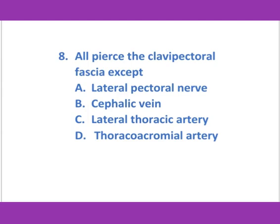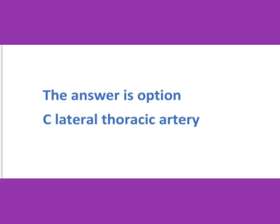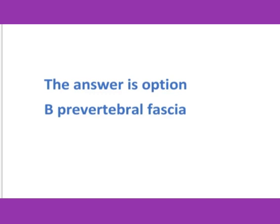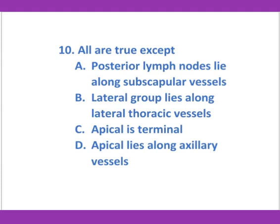All pierce the clavipectoral fascia except — (a) lateral pectoral nerve, (b) cephalic vein, (c) lateral thoracic artery, (d) thoracoacromial artery. The answer is option C: lateral thoracic artery. Axillary sheath is derived from — (a) pretracheal fascia, (b) prevertebral fascia, (c) deep fascia of thorax, (d) investing layer of deep cervical fascia. The answer is option B: prevertebral fascia.